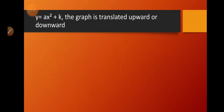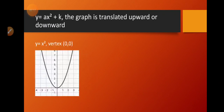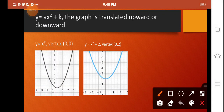Now what if our graph takes the form y is equal to ax squared plus k? The graph is translated either upward or downward, depending on the value of k. If our k is positive, the original graph is translated 2 units upward, so the new equation is y is equal to x squared plus 2, whose vertex is at 0 and 2.